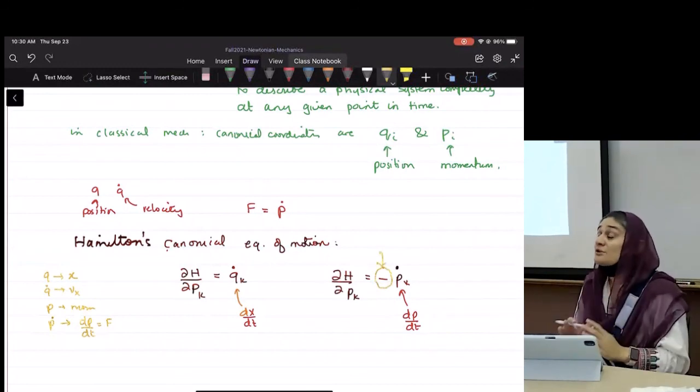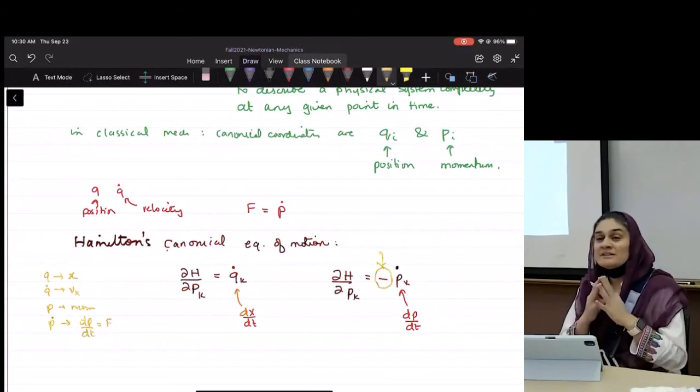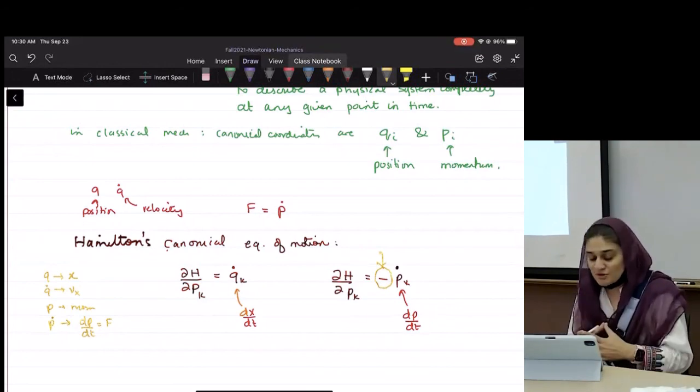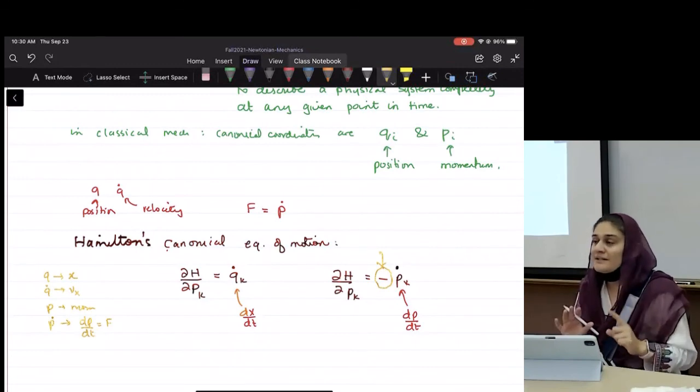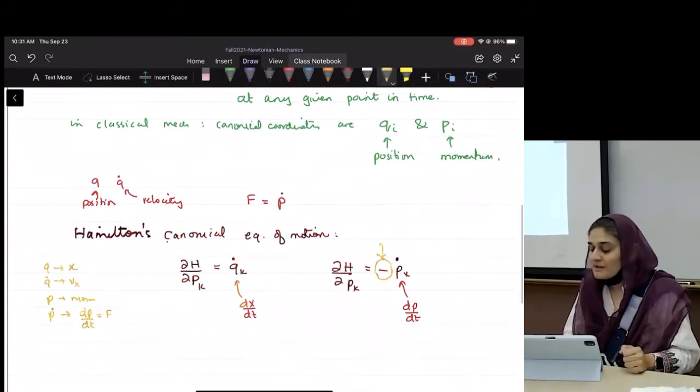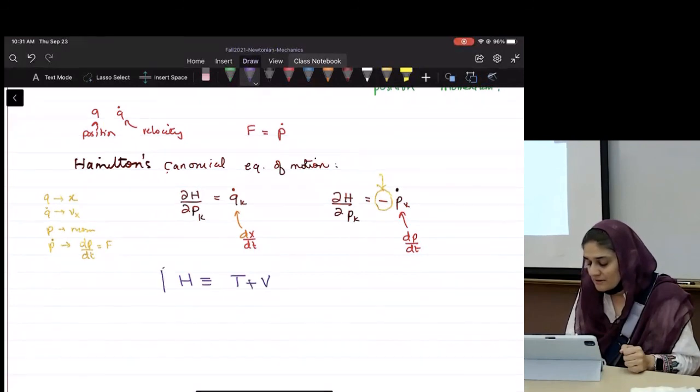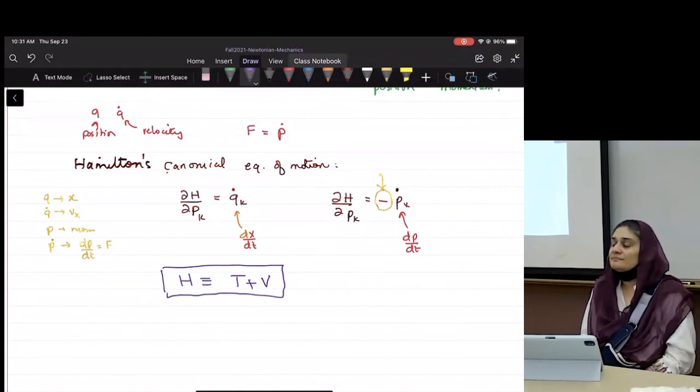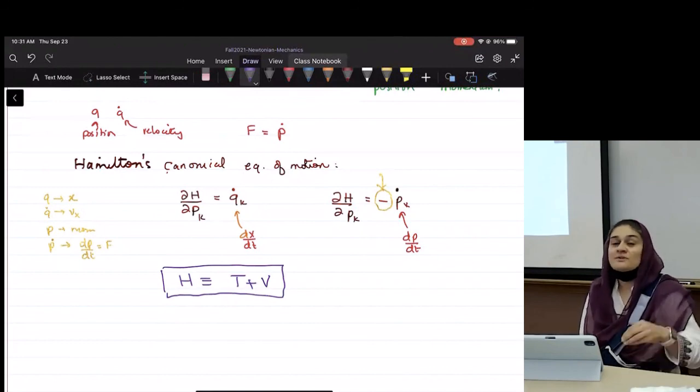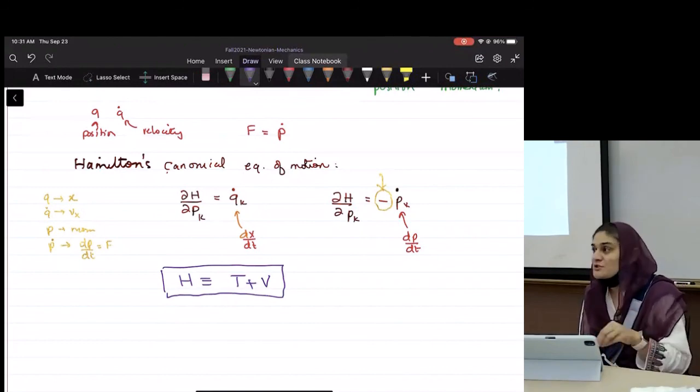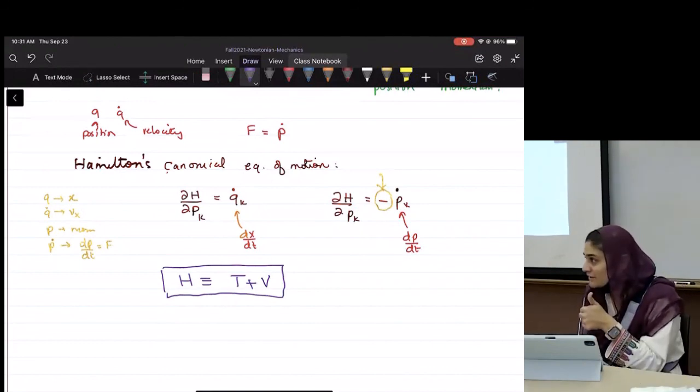Yes, these are important. These are called Hamilton's canonical equations of motion. Now, I have not yet defined what h is. H, the Hamiltonian, is defined as T plus V, where T is kinetic energy and V is potential energy. So T is kinetic energy and V is potential energy. Good.